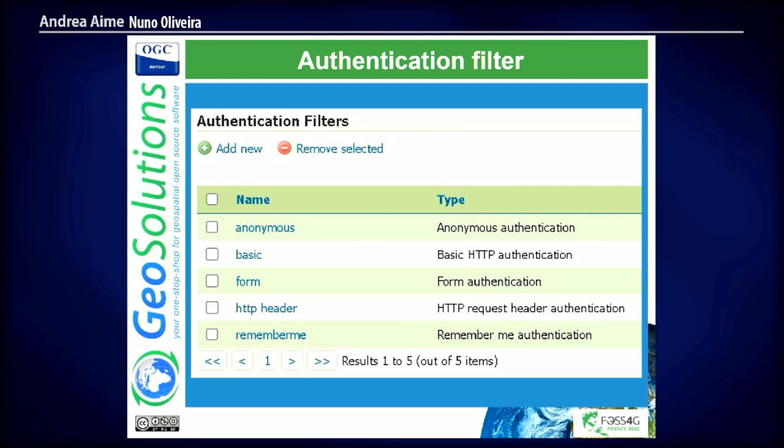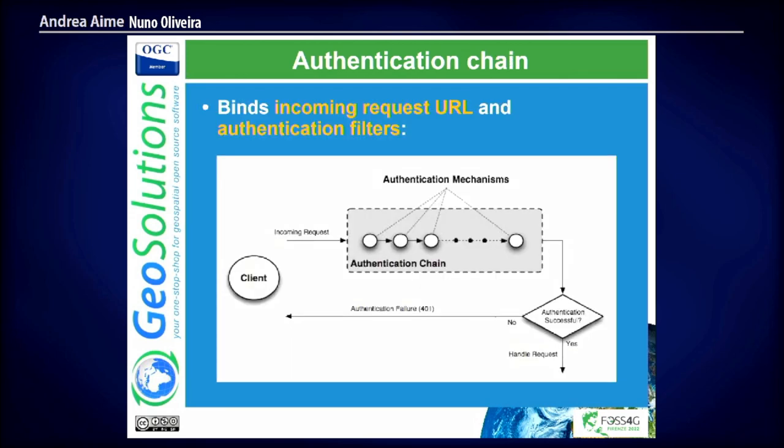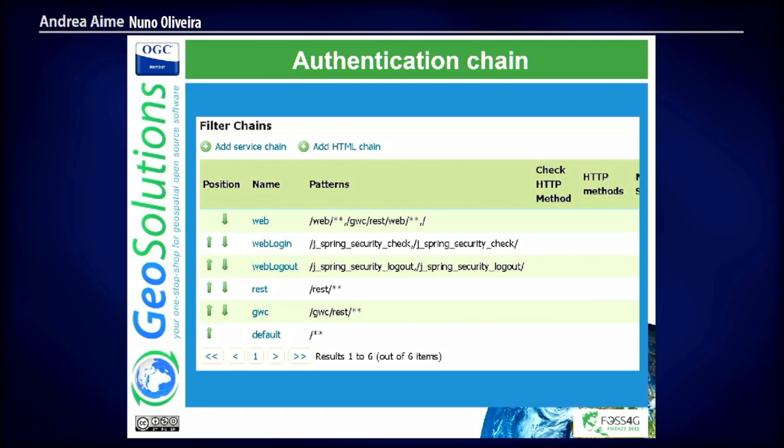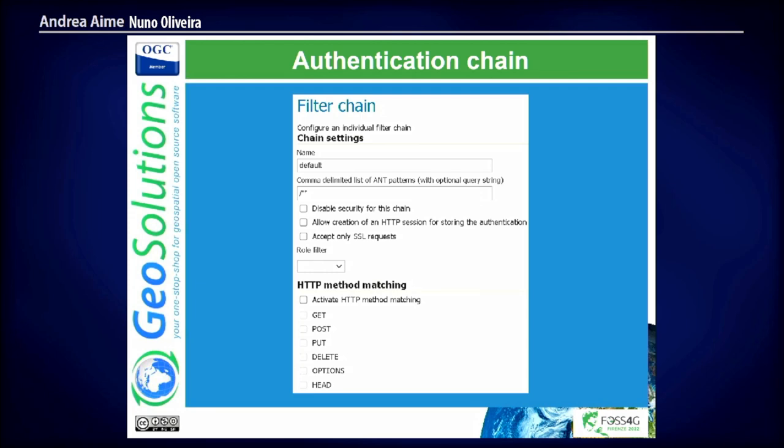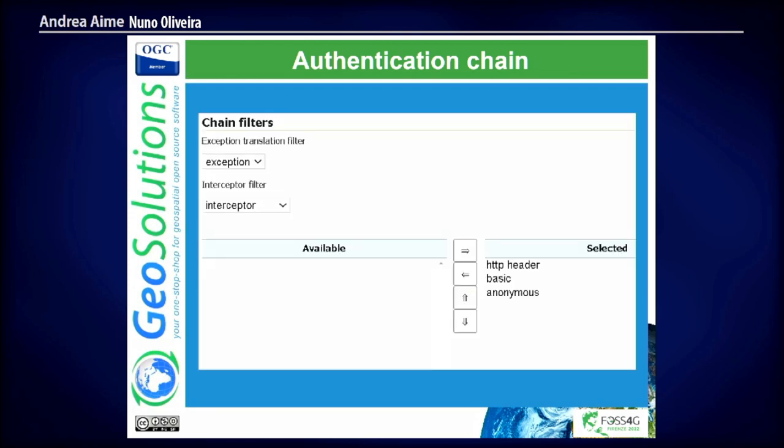Long story short: authentication providers are responsible for authenticating resources. Authentication filters know how to extract authentication information for endpoints. We have the authentication chain, which is the component that binds all of this together. We can say: for the web URLs, use form authentication and all available authentication providers. Looking at the default chain, there is a specific one for the web and for the REST — for the REST, it only authorizes the administrator to access it, which is quite secure. The default chain, used for services, shows that the matching can be quite complex: by default it looks at the header, basic, and anonymous filters.